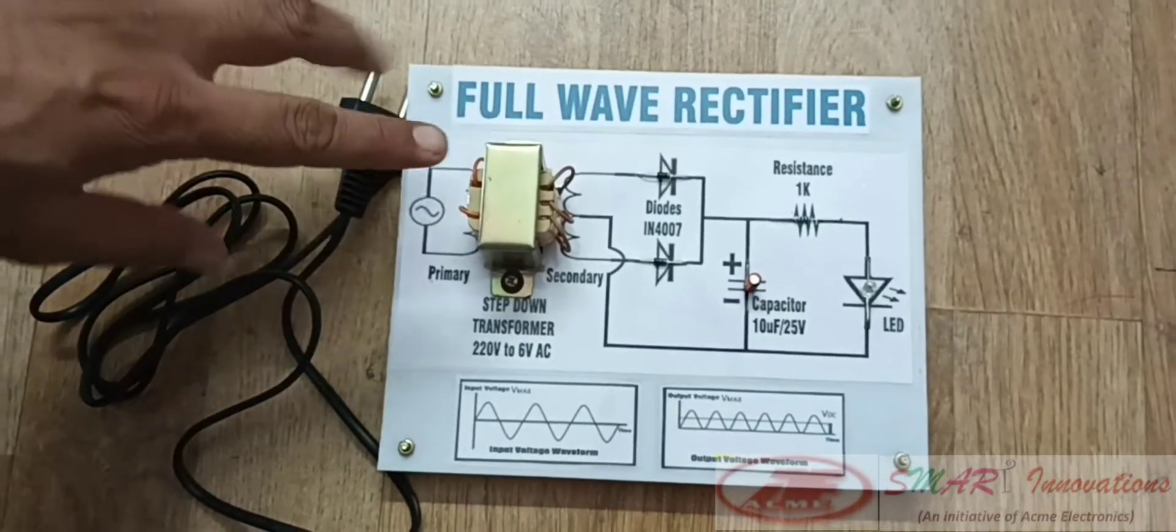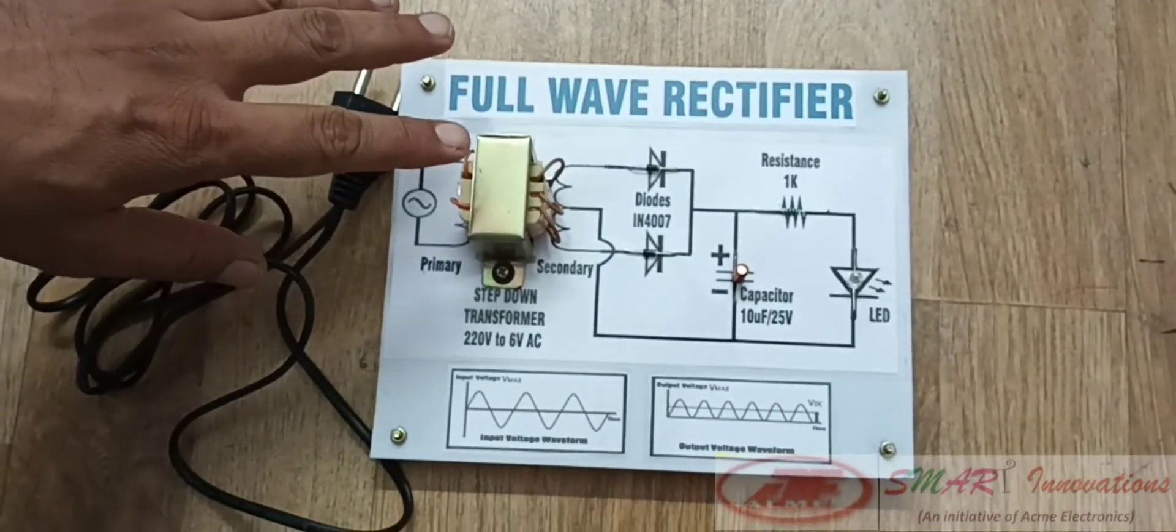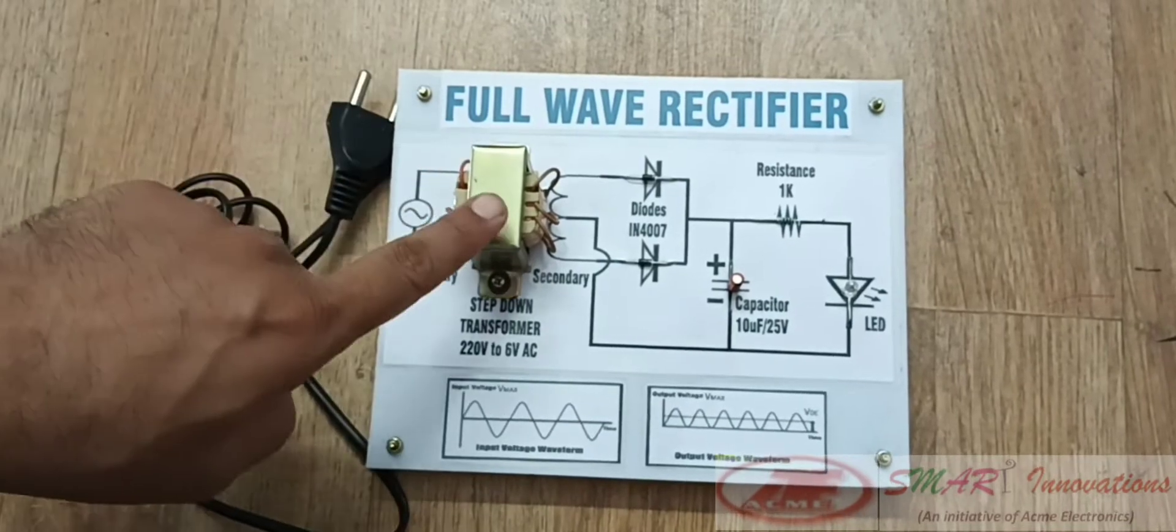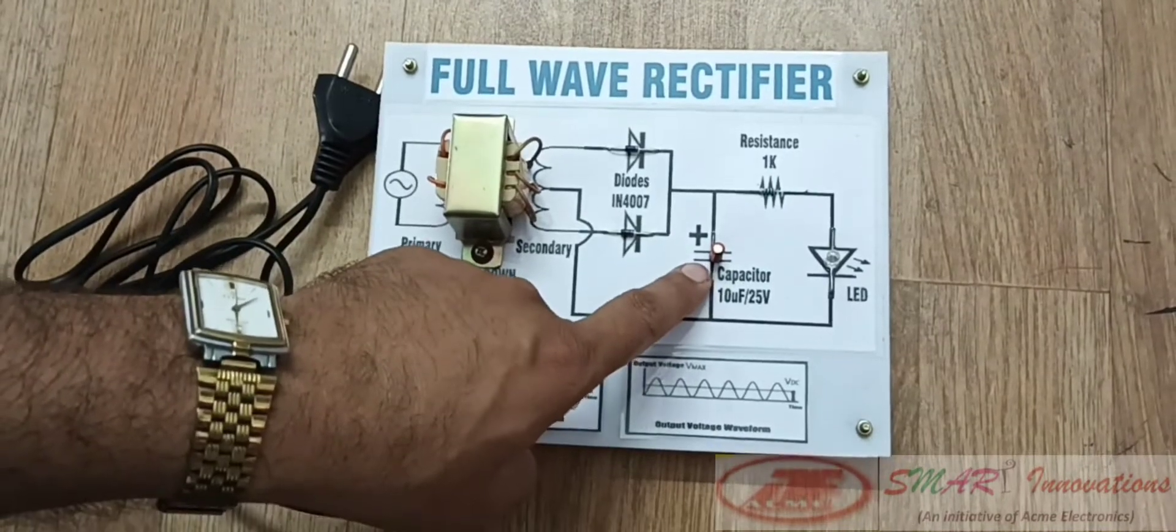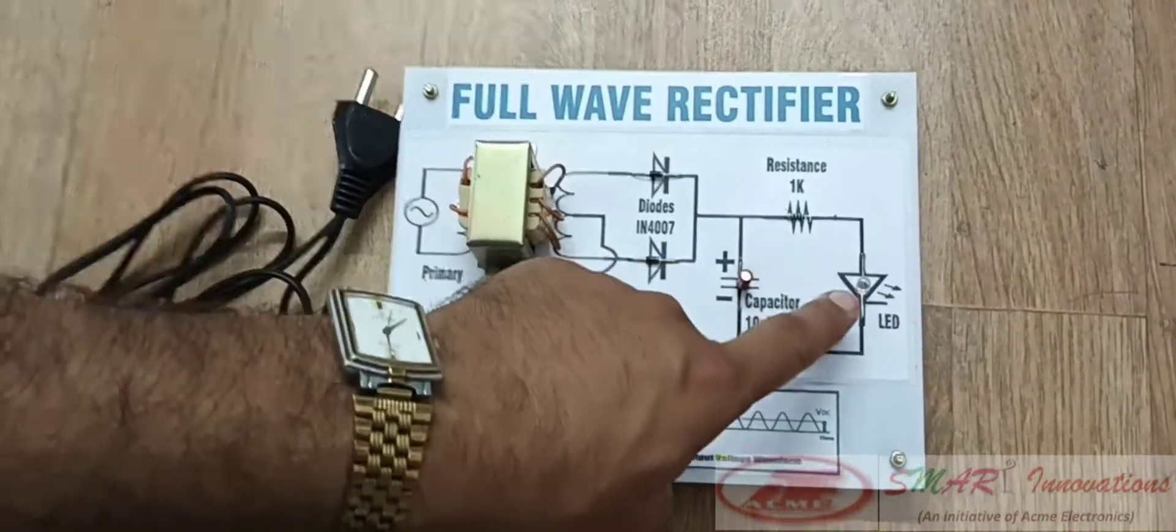This is a project of a full wave rectifier. The main components are a step-down transformer, diodes, capacitor, resistance, and LED.